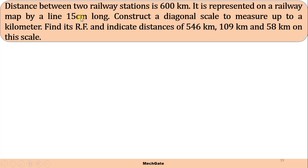RF is given as length of drawing divided by actual distance between two objects. So length of drawing is 15 centimeters, actual distance is 600 kilometers. RF is equivalent to 15 centimeters divided by 600 kilometers. We will find our RF as 25 × 10⁻⁸, which is very small.